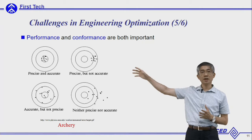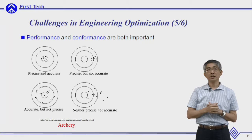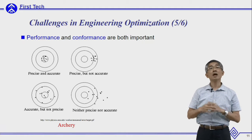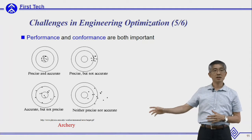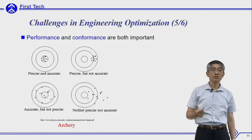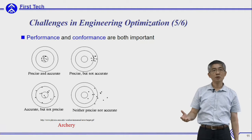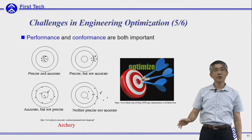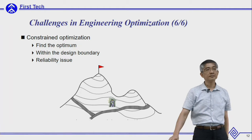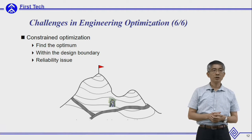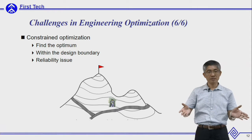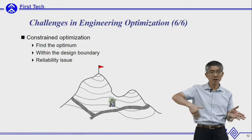In this archery example, you can see arrows very concentrated at a certain point — that's good conformance but poor performance if the arrows miss the target. In some cases you may have neither good performance nor good conformance. The ideal goal of optimization is to be on target. The last challenge is constraints: when climbing the mountain, you need to stay within a certain fence and find the top within that boundary.